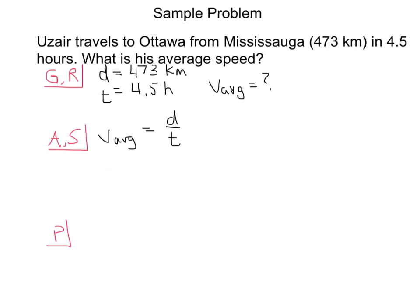I've already written out the given and required here. So we're given the distance and the time, and we need to find the average speed. And the equation we're going to use is average speed equals distance over time.